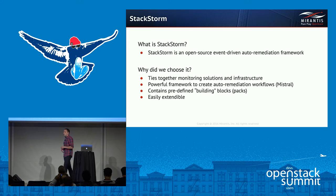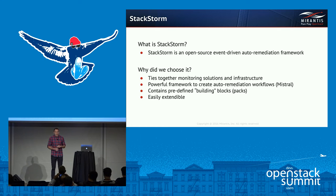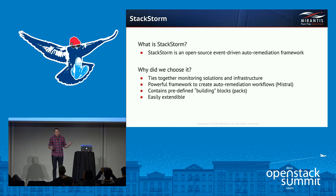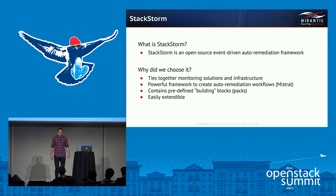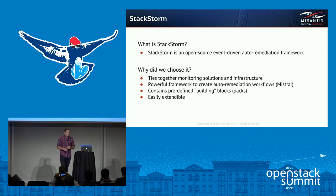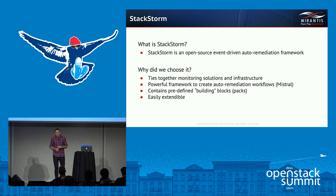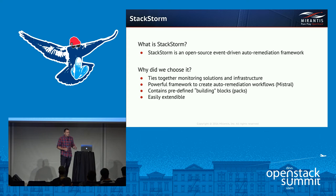While looking for an open-source solution for auto-remediation, we found StackStorm, which was also used by Netflix at the same time. StackStorm is an open-source, event-driven auto-remediation framework. We use it because it ties together our monitoring solutions on one hand and infrastructure on the other. It's a powerful framework to create auto-remediation actions — it has Mistral workflow engine under the hood, predefined building blocks called Packs, and integrations with Jira, Slack, Nagios, Sensu, and more. It's easily extendable so you can write your own plugins, sensors, or rules — it's just code and some YAML.